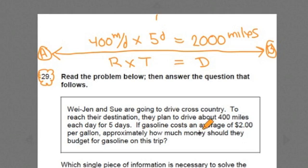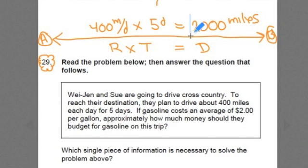And then I get to this last piece. It says, if gasoline costs $2 per gallon, approximately how much should they budget for this trip here? We know that they're going to go 2,000 miles. And we know that it's going to cost them $2 per gallon. So, how much is it going to cost altogether? I mean, how much are they going to need for their budget? And then it says, which piece of information is missing here that's necessary to solve the problem?